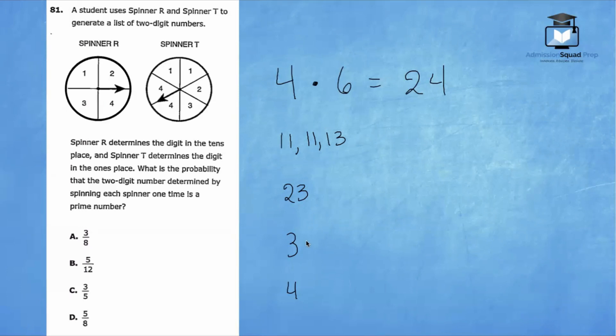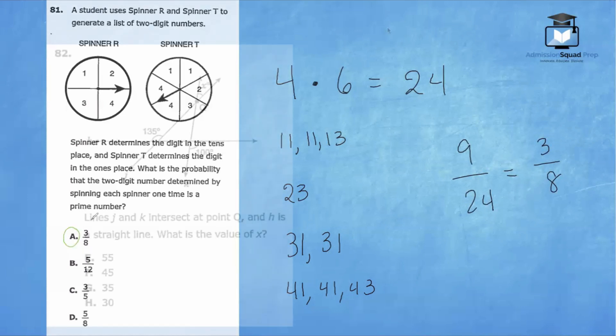If spinner R landed on 3, then our possibilities for a prime number is 31 and 31. So that's two chances there. 32, 33, and 34 are all composite numbers. Finally, if spinner R landed on 4, the only prime numbers that remain are 41, 41, and 43. So we have 1, 2, 3, 4, 5, 6, 7, 8, nine total possibilities out of 24, which simplifies to 3/8. So A is the correct answer.